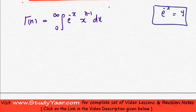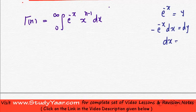Therefore, if I differentiate this, what do I get? Minus e raised to power minus x dx is equal to dy. Or in other words, this is your y, therefore, your dx is equal to minus dy upon y.